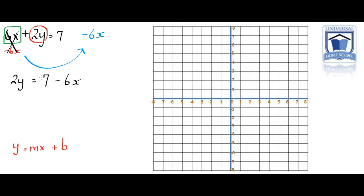We want it to be in the format of mx plus b, so we're going to have to swap it around because it's the wrong way around. It should read 2y equals negative 6x plus 7.